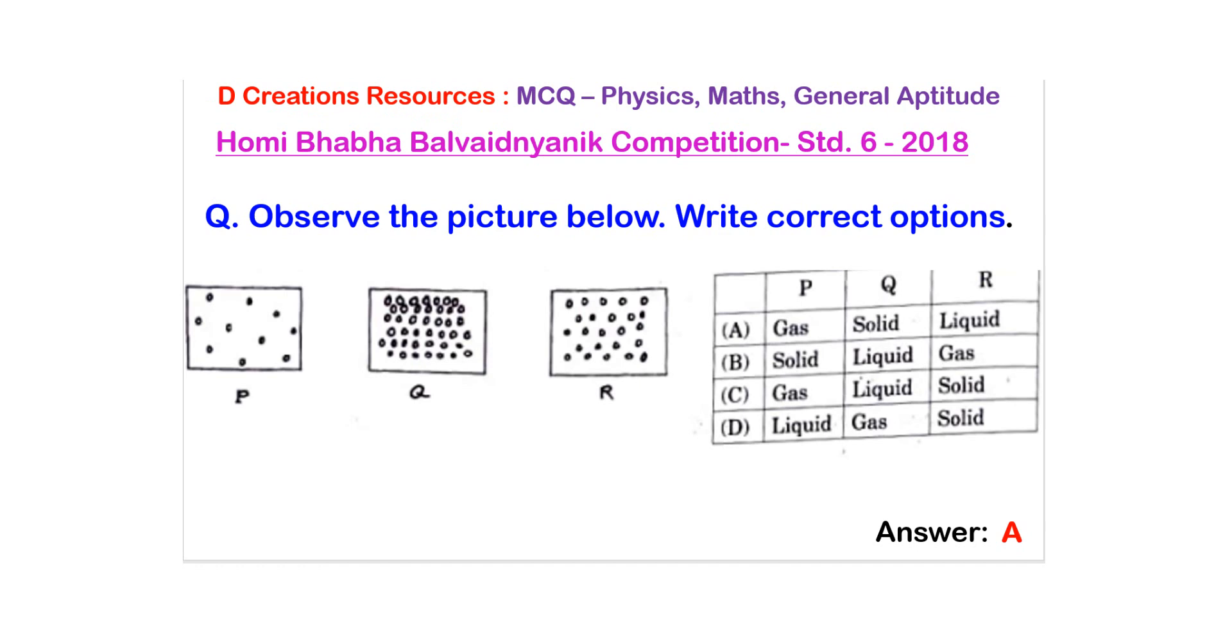In option A we see that box P is gas, box Q is solid and box R is liquid. So this is our correct answer. So the answer is A. Thank you.